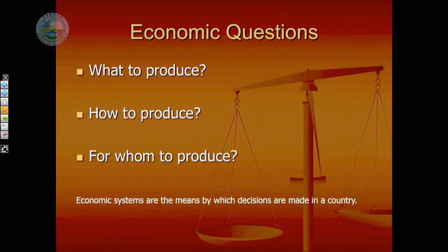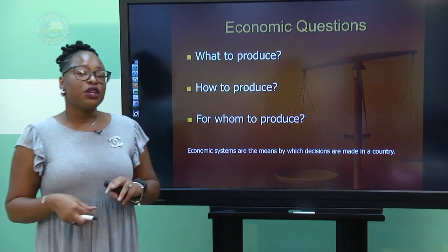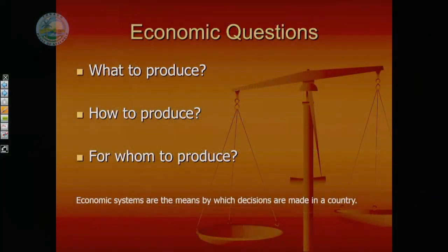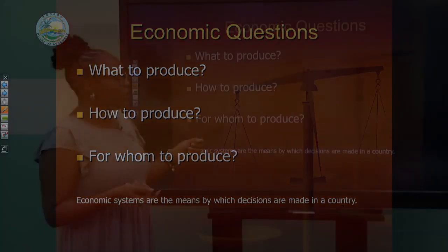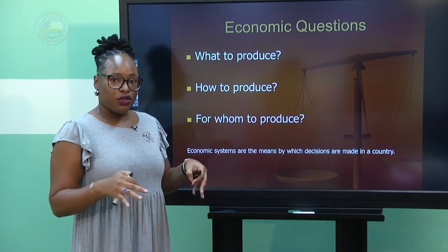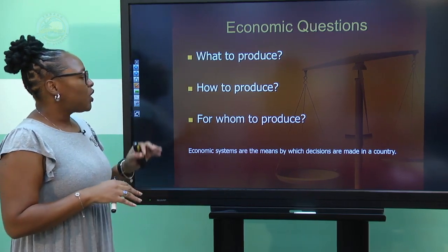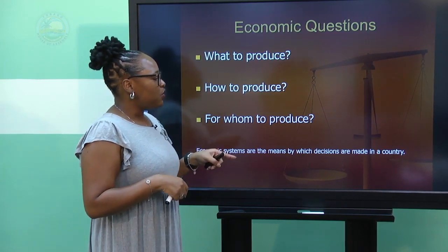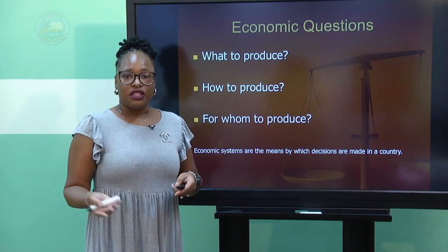In terms of economics and producing goods and services, we have to ask ourselves three important economic questions: what to produce, how to produce, and for whom we're producing. Your parents have to ask themselves that question too when they're providing for you. This is how they make their choices and give incentives in order to know what to produce within the household. Our country and the people within it would make decisions based on these three questions and the economic systems that they follow.